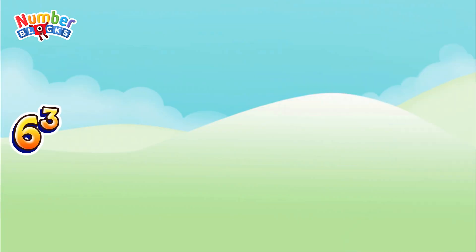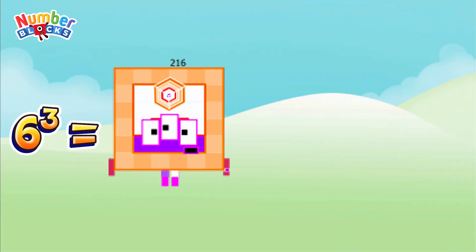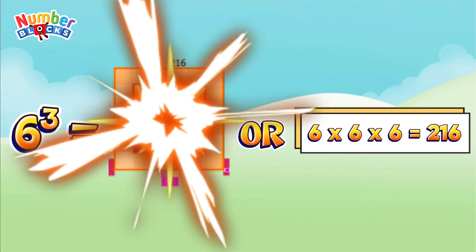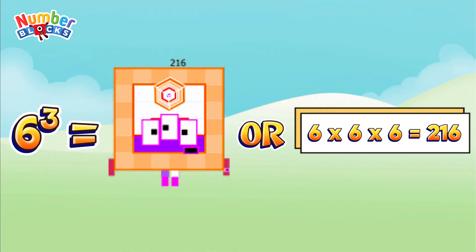6 cubed is equal to 216, or 6 multiplied by 6 multiplied by 6 is equal to 216.